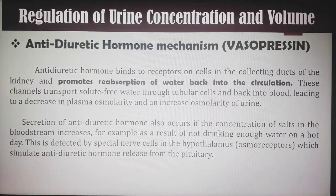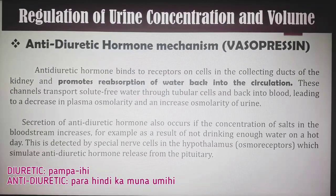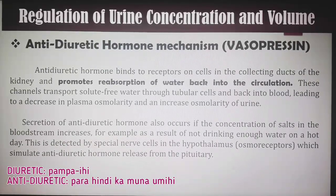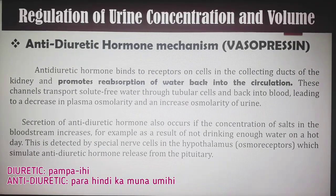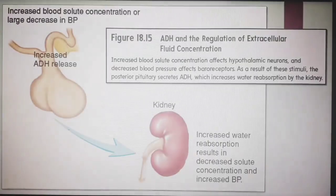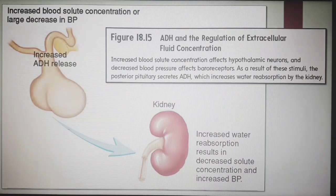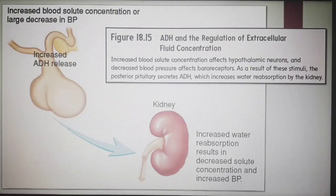Anti-diuretic hormone (ADH) binds to receptors on cells in the collecting ducts and promotes reabsorption of water back into the circulation. These channels transport solute-free water through tubular cells back into blood, leading to a decrease in plasma osmolarity and an increase in urine osmolarity. Secretion of ADH also occurs if the concentration of salts in the bloodstream increases, detected by special nerve cells in the hypothalamus, which stimulate ADH release from the pituitary. Increased blood solute concentration affects hypothalamic neurons and decreased blood pressure affects baroreceptors, causing the posterior pituitary to secrete ADH, which increases water reabsorption in the kidney.